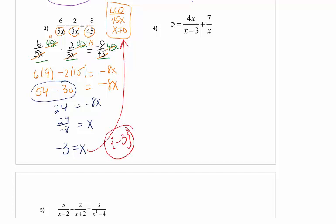Going to number 4. My LCD for this problem. I have an X minus 3 and I have an X. They don't match, so I need both of them. If I were to set this equal to 0 using 6.6 rules, X cannot equal 0 from this first piece, and X cannot equal 3 from my second factor. If I get either one of those as an answer, I have to cross them out.